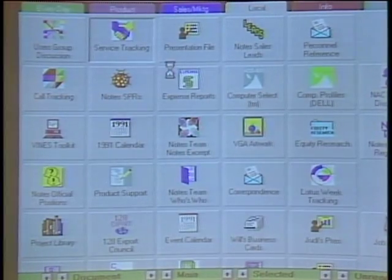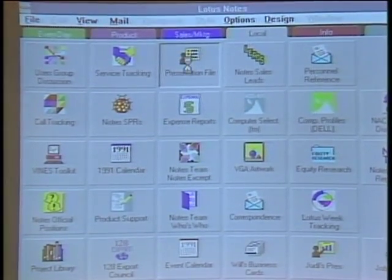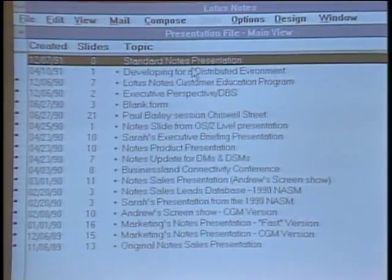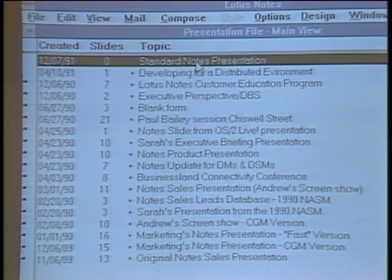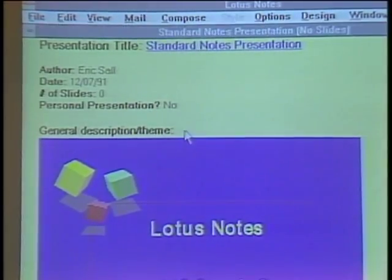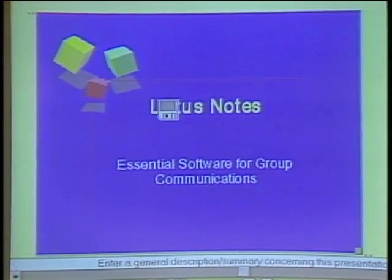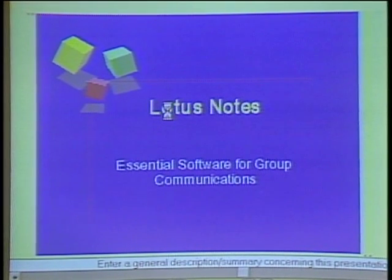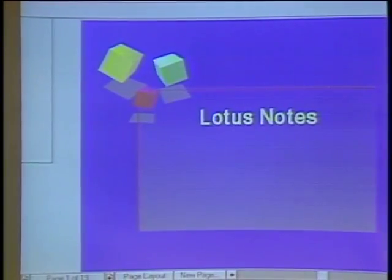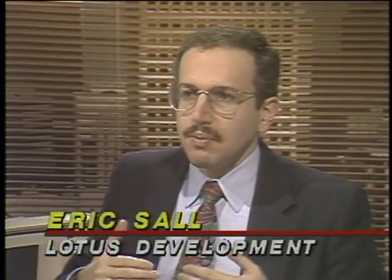The third application is a presentation file used among a sales team to share standard and customized presentations so people don't have to keep reinventing the wheel. Embedded in this Notes document is an actual presentation created in Lotus Freelance Plus for Windows. Double-clicking brings up Freelance and the presentation itself. As you work on the presentation and make changes, those changes are automatically reflected back in the Notes document. There's one version of the presentation, and all the different salespeople can have their versions inside Lotus Notes accessible to others, with updates automatically distributed so everyone always has the latest version.